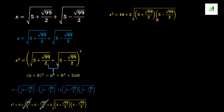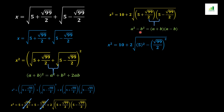We can see that (5 + √99/2) and (5 − √99/2) are the same values but with different signs, so we can apply the (a + b)(a − b) = a² − b² formula. Here a = 5 and b = √99/2, giving us 5² minus (√99/2)², all under the root, and the factor of 2 remains the same.